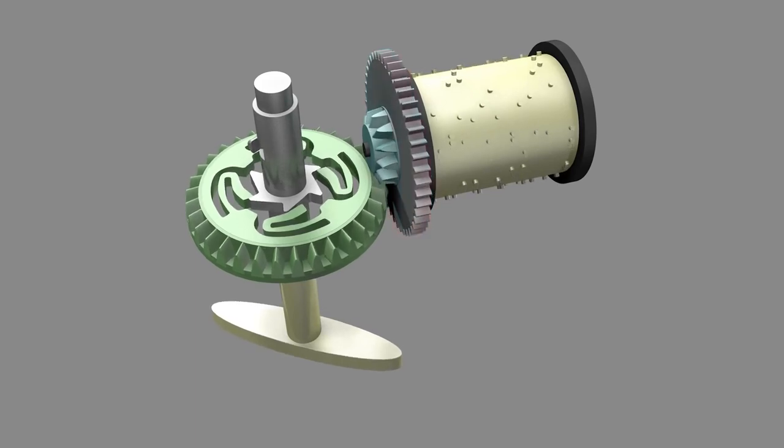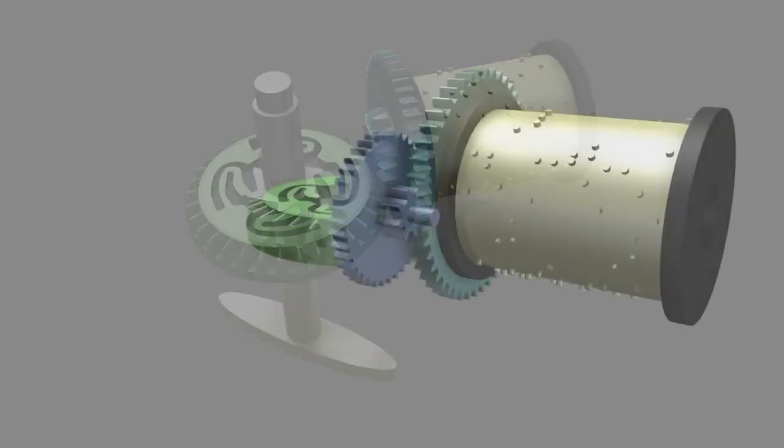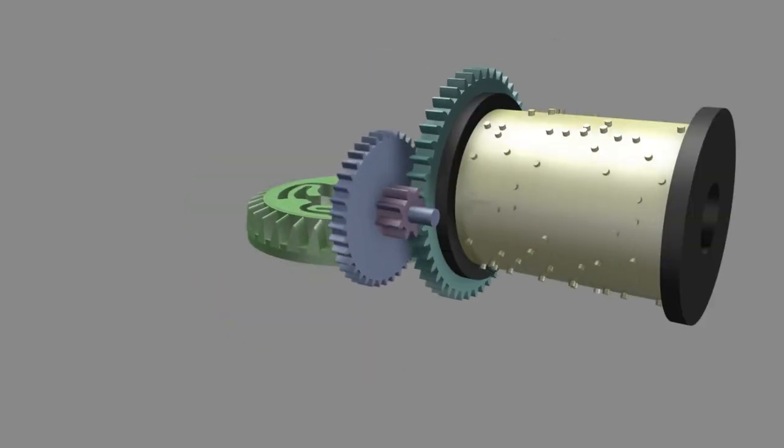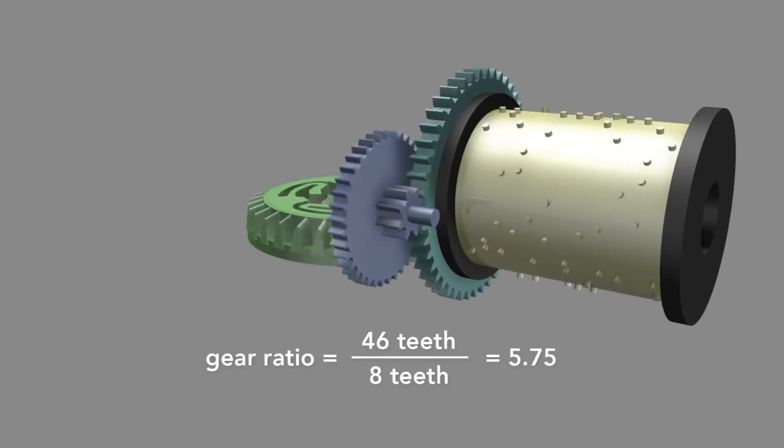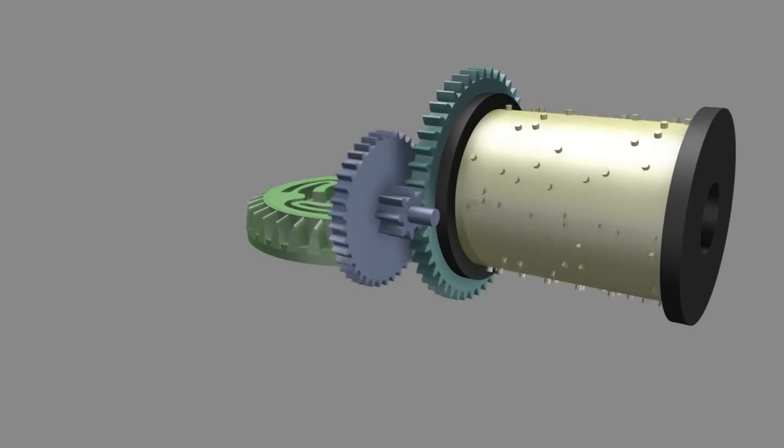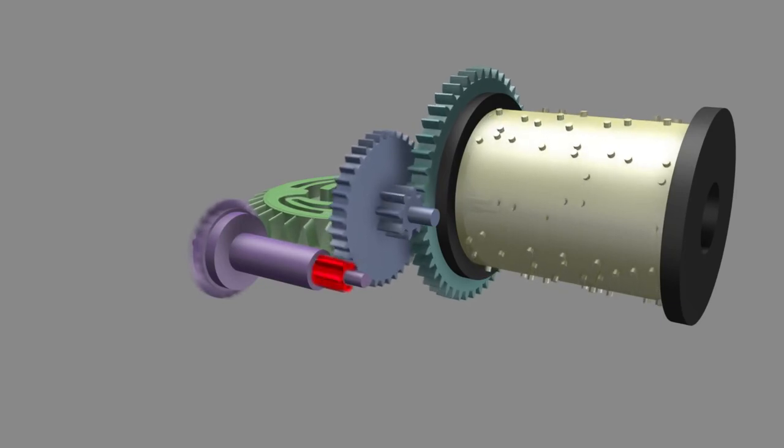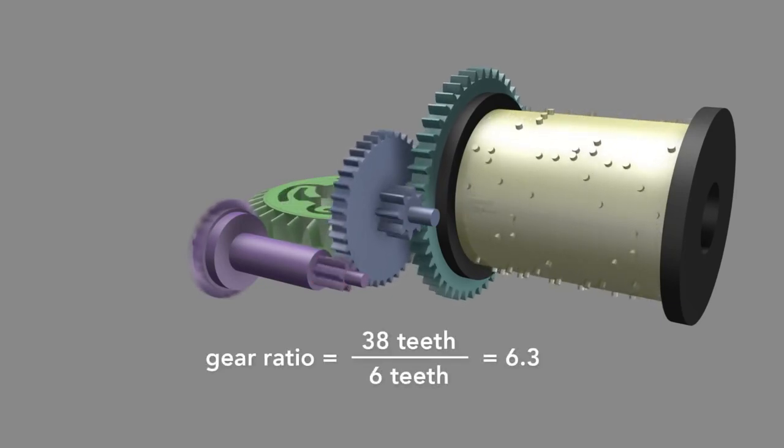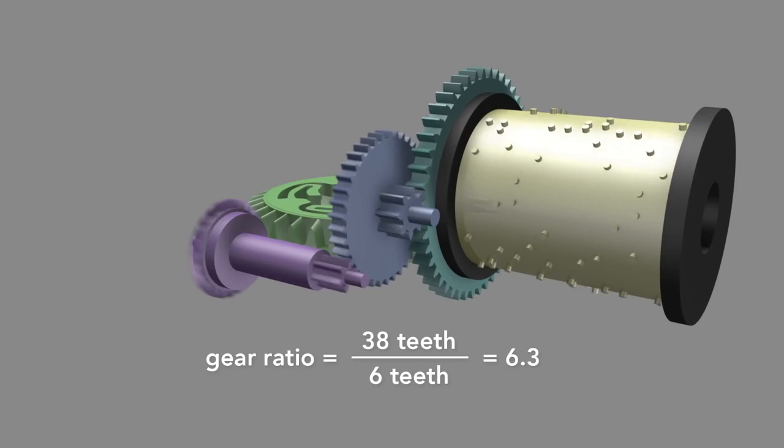The drum is also affixed to a larger gear, which engages another smaller gear, this time multiplying the rotational speed by 5.75 times. The larger gear on this piece engages the smaller end of another spur gear, further multiplying the rate by 6.3 times.